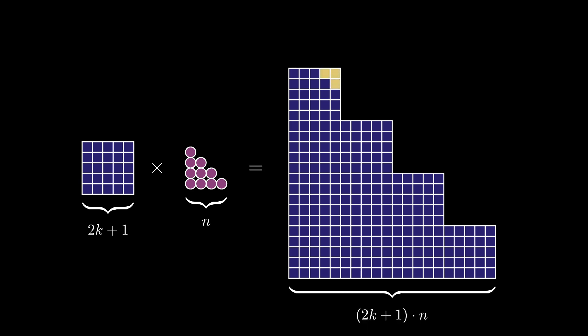But now each square array that's at the end of one of the rows has a triangular array with base length k in the upper right corner, which we can swing around and drop down into place like this, resulting in an array with a base of 2k plus 1 times n plus k.